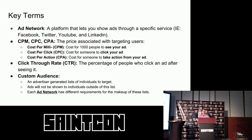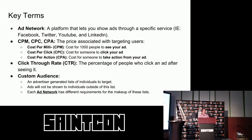The first term is 'ad network' — basically a platform that lets you show ads through a specific service. Facebook, Twitter, YouTube, and LinkedIn are all ad networks. With advertising comes a price, because nothing in advertising is free. The price to get a user to see or click your ad varies by platform and is usually based on one of three structures: Cost Per Milli (CPM) — the cost for 1,000 people to see your ad; Cost Per Click (CPC) — the cost for someone to click your ad; and Cost Per Action (CPA) — the cost for someone to take action from your ad.